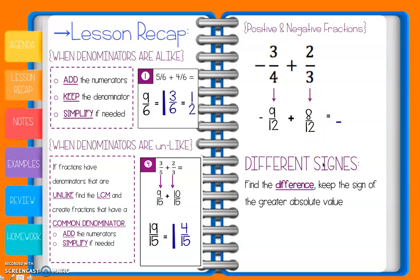And now, I can just find the difference or I can subtract like normal. So, 9/12 minus 8/12 would be 1/12. So, our answer is negative 1/12.